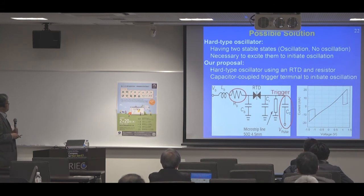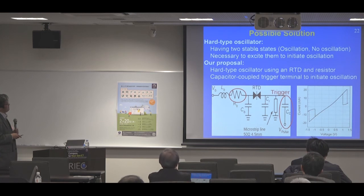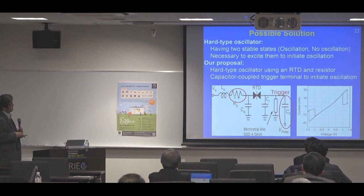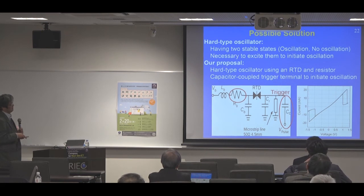To solve this problem, we proposed using the hard-type oscillator concept. The hard-type oscillator is defined as an oscillator having two stable states — oscillation and no oscillation — and it is necessary to excite it to initiate oscillation. In a simple example of this circuit, we employ a series resistor in the bias line instead of the parallel stabilization resistor. This series resistor suppresses the negative differential resistance — in the IV curve you can see no NDR occurs, but instead jumps and hysteresis, so no spontaneous oscillation occurs.